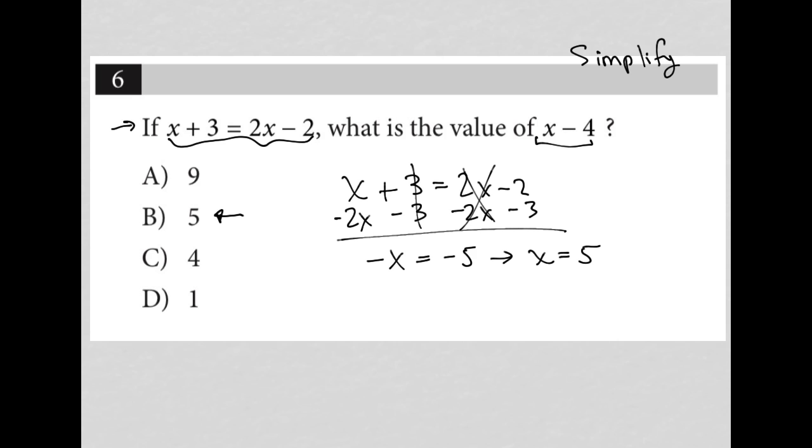Don't be fooled by the 5 being there. The question does not ask for the value of x. The question asks for the value of x minus 4. So since we know x is 5, this just becomes 5 minus 4, which is 1. And our answer is choice D.